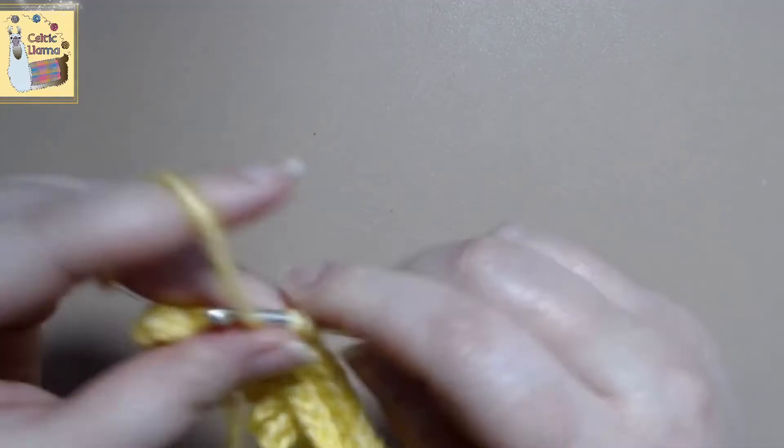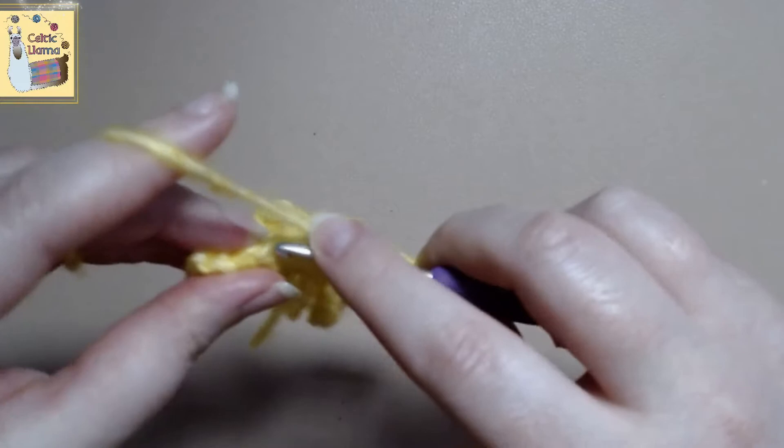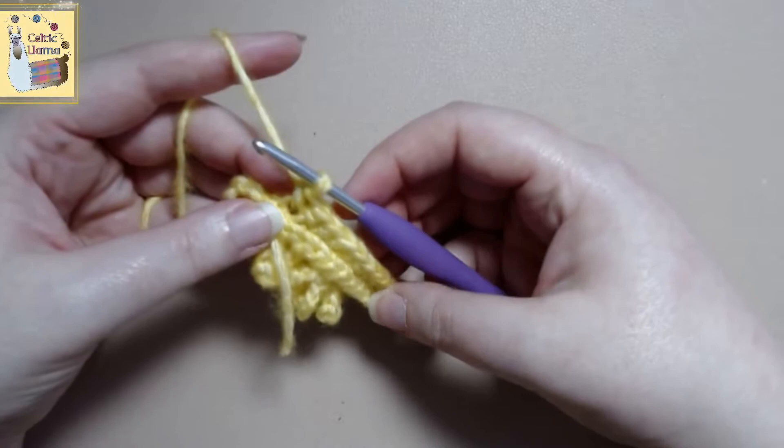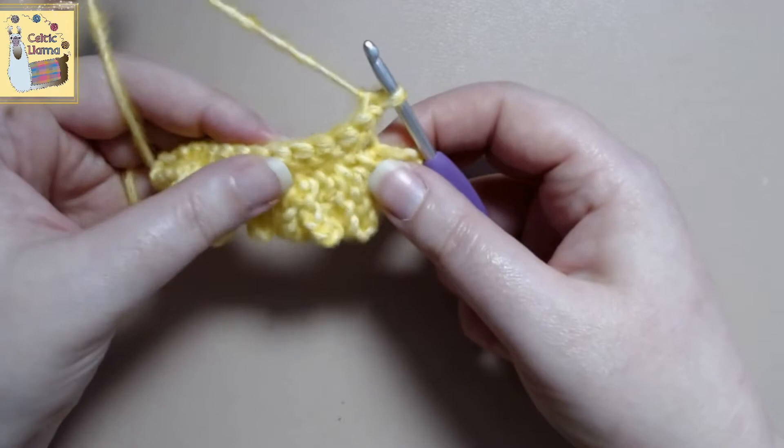So two, and ten. Again, if you're doing this in the round, you would just do a slip stitch to connect it and chain one. But we'll just repeat just like we did on the first row.